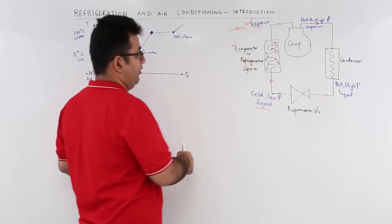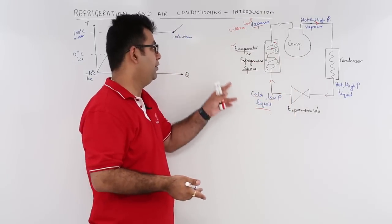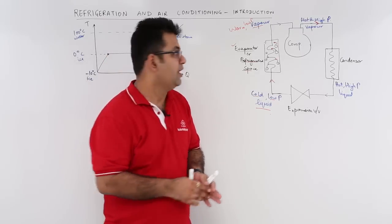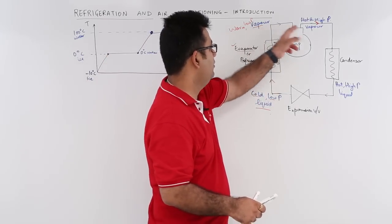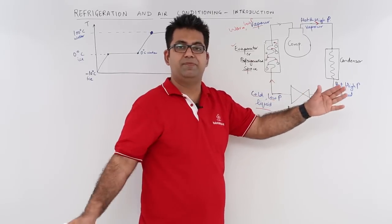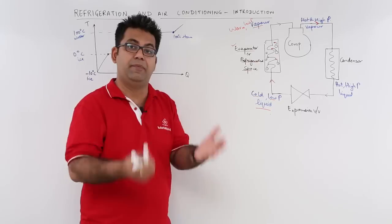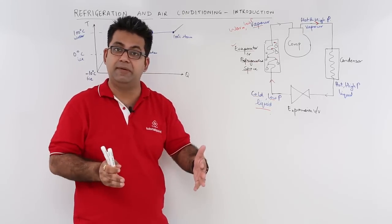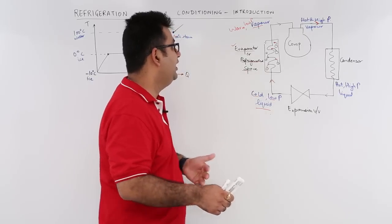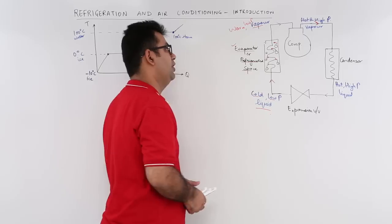The idea behind the compressor, the evaporator, and the expansion valve is now understood. The compressor compresses the vapor. The expansion valve expands the hot liquid to reduce the pressure and eventually the temperature, because the volume stays the same. The evaporator is where the heat exchange takes place between the substance to be cooled and the refrigerant.